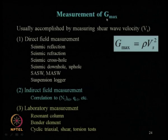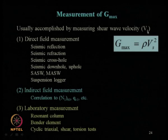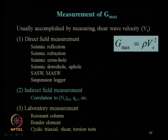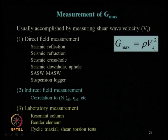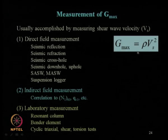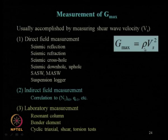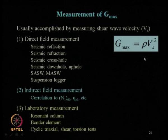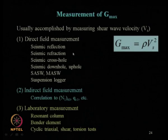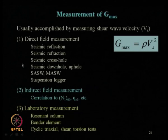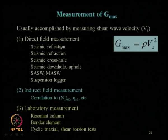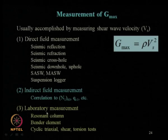G_max is typically measured using the shear wave velocity V_s, and G_max = ρ·V_s², where ρ is the mass density (not unit weight; if using unit weight, divide by g). There are three major ways to determine G_max: direct field measurement, indirect field measurement, and laboratory measurement. Direct field methods include seismic reflection, seismic refraction, seismic cross-hole, down-hole, up-hole tests, SASW/MASW, and suspension logger tests.